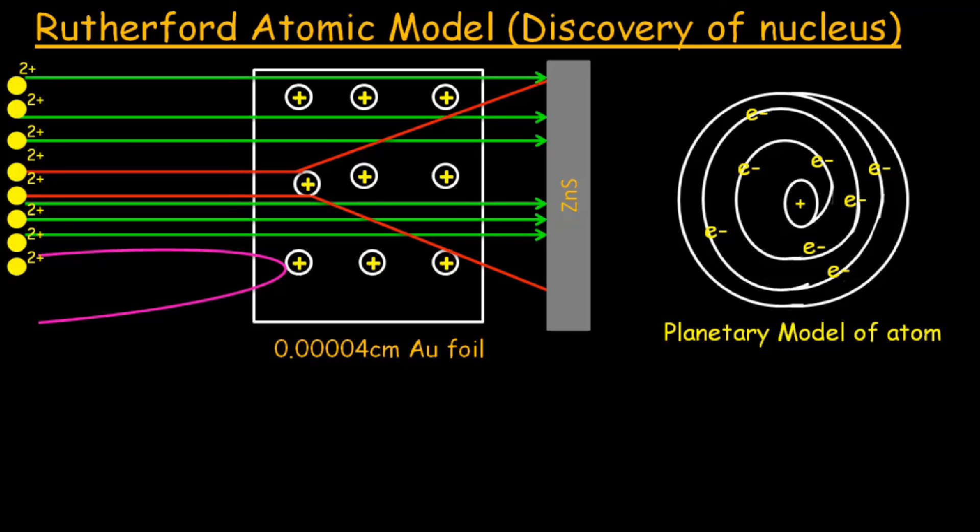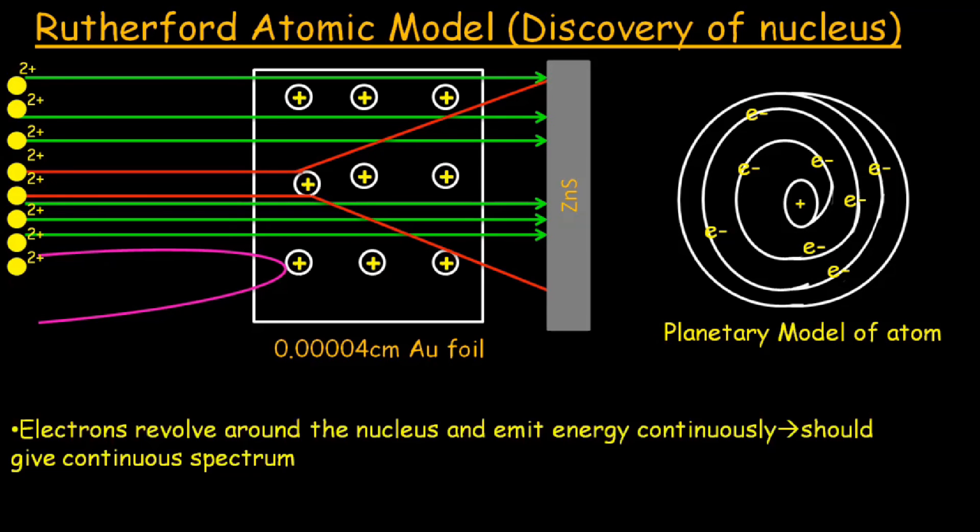Moreover, Rutherford also considered the electrons as material particles. He thought that the planetary model of atoms was not satisfactory. If the electrons emit energy continuously, there must be a point when they lose all of their energy and fall inside the nucleus. And when they fall inside the nucleus, the structure of the atom will be destroyed. That's how it was found that the planetary model of atoms was not credible.